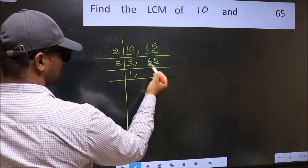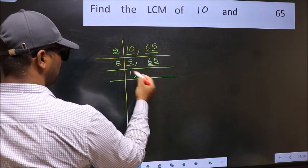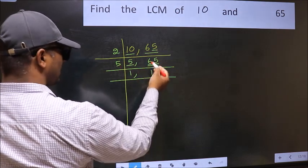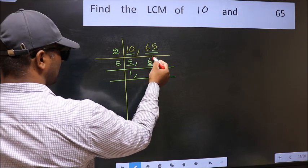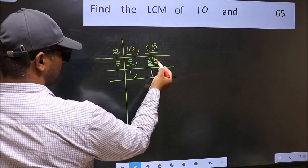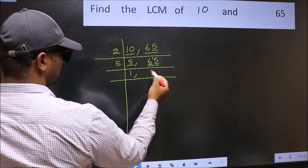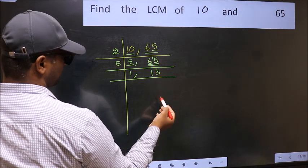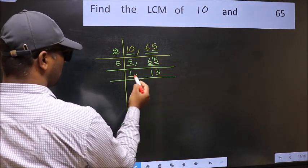First number 6. A number close to 6 in 5 table is 5 once 5. 6 minus 5, 1, 1 carried forward 15. When do we get 15 in 5 table? 5 times 3 is 15.